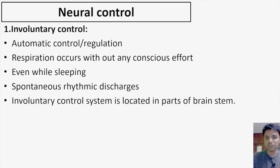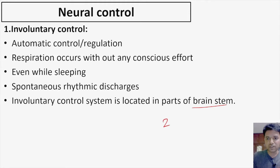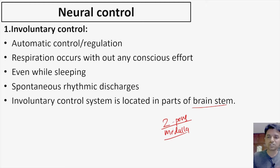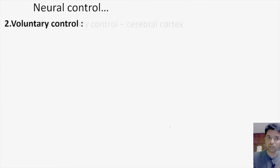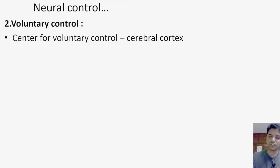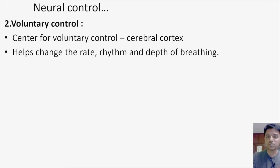This involuntary control system — these group of neurons emitting action potentials that stimulate the muscles, causing contraction leading to inspiration and expiration — is located in parts of the brain stem, specifically in two parts: the pons and the medulla oblongata. These are the two regions where the involuntary control neurons are located. We also have voluntary control, whose center is located higher up in the cerebral cortex.